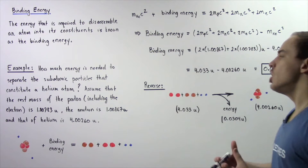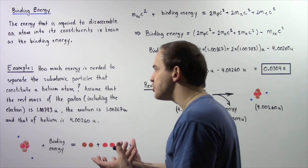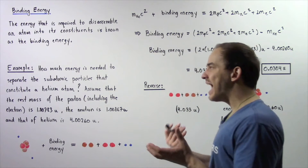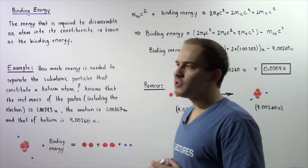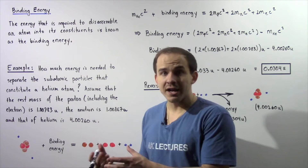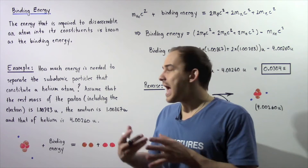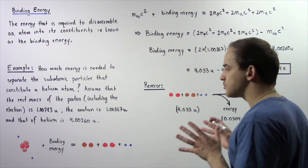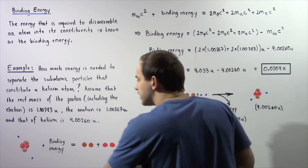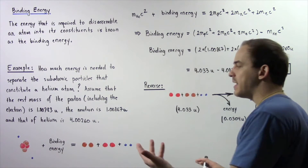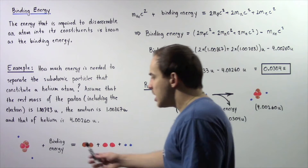Basically, we're looking for the binding energy. We're trying to calculate how much total mechanical energy is required to completely disassemble our helium atom. Let's begin by looking at the following diagram, which describes what is taking place.